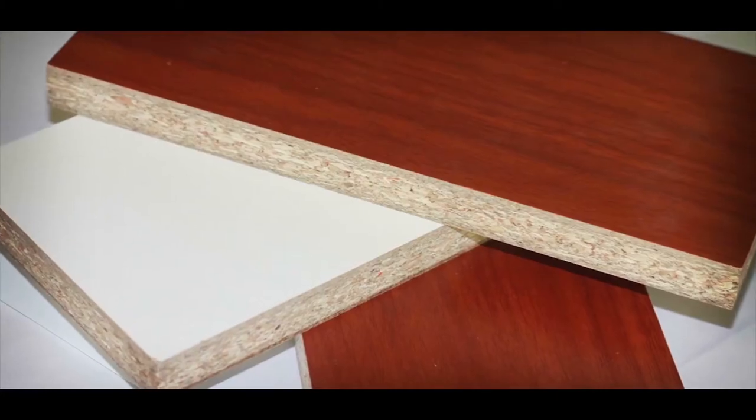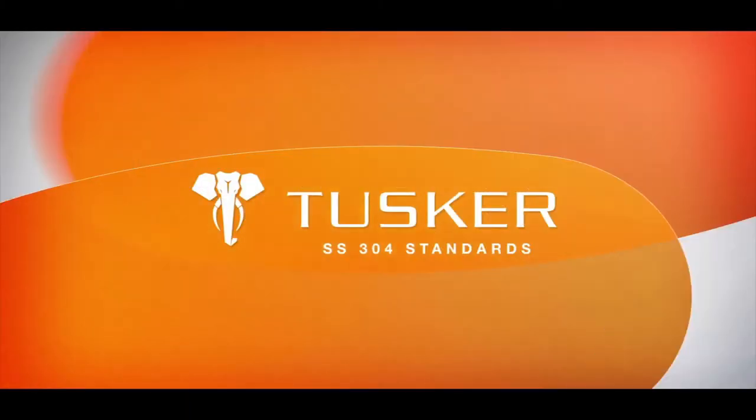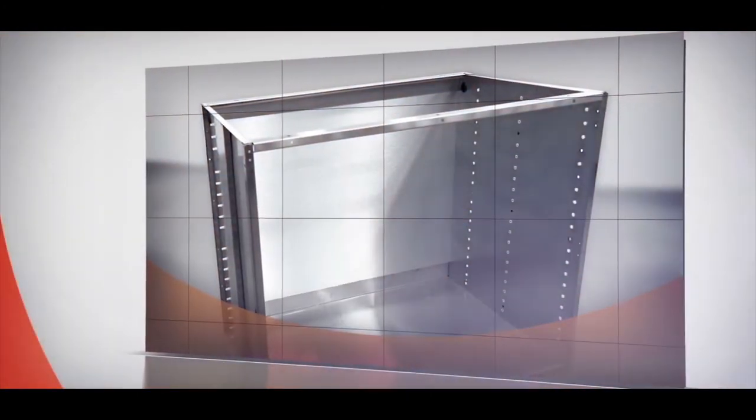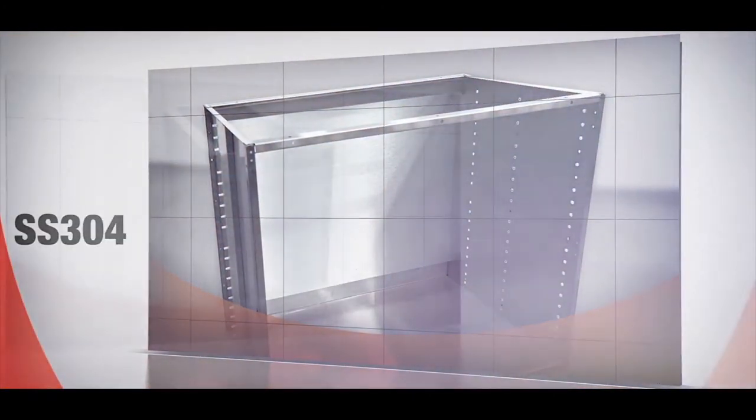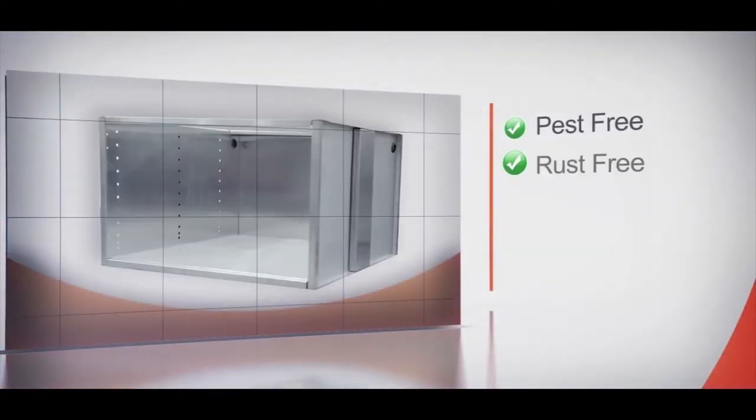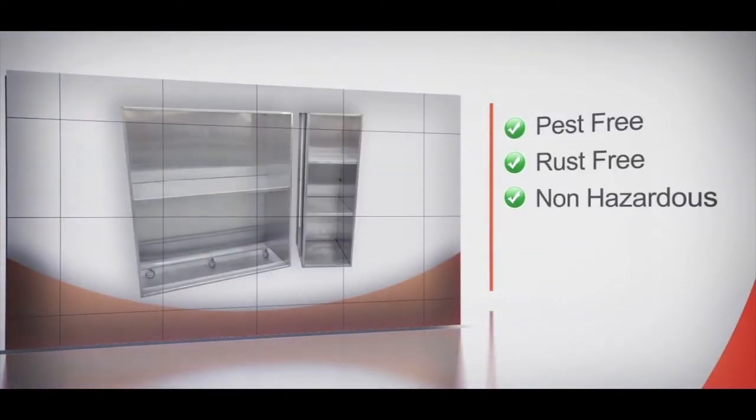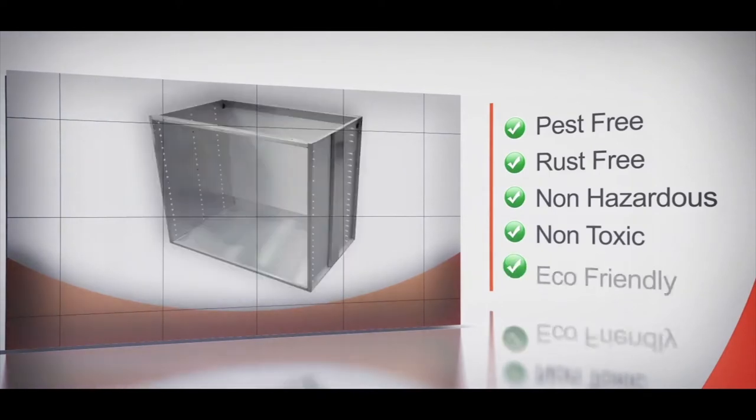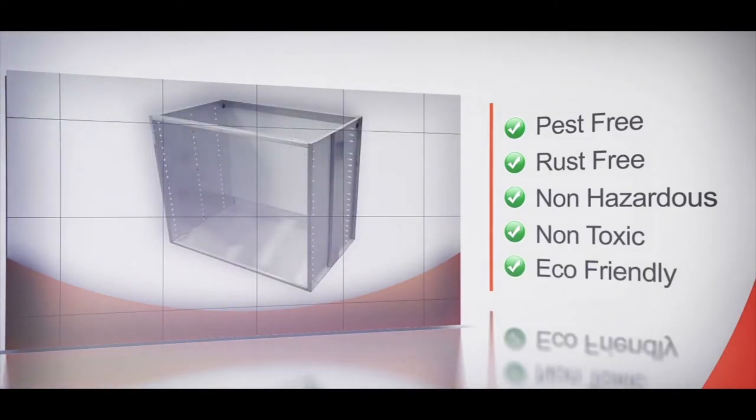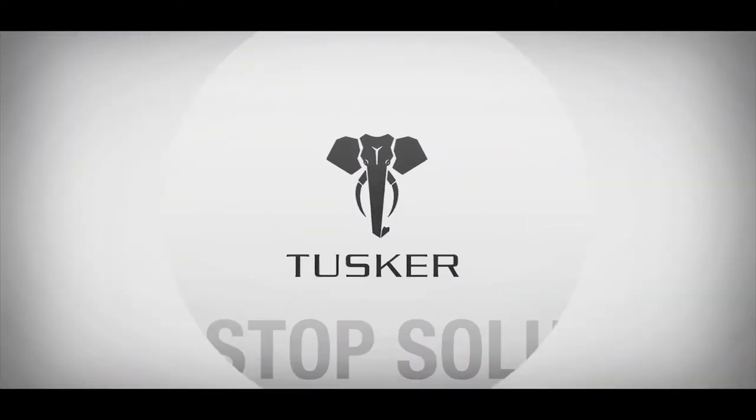Such as plywood and particle boards with laminates, which tend to get absorbed by the food and raw materials. TUSCA cabinets are made from stainless steel 304 grade, ensuring pest-free, rust-free, non-hazardous, non-toxic, and eco-friendly kitchens.